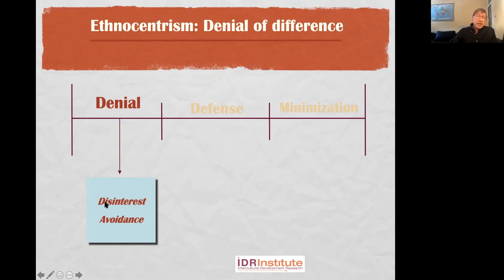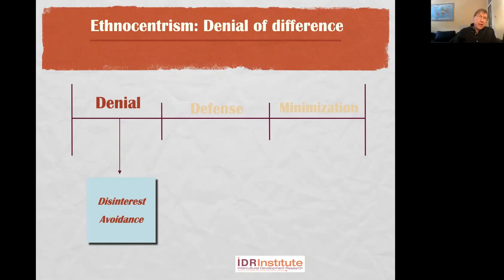The first stage of denial is associated with a disinterest in other cultures and some kind of avoidance of cultural difference. For instance, people who live in gated communities — though they don't admit it openly — are doing so because it makes it more likely they'll be in a homogeneous situation, not around a lot of difference. People who go to private schools sometimes have a similar kind of interest, although that's frequently not stated very openly.